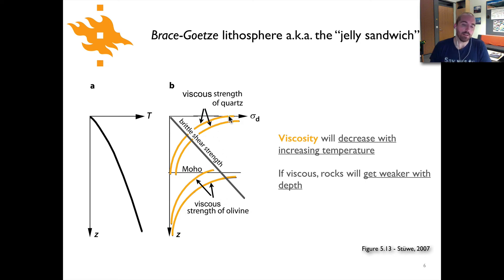You can see that the strength is highest at the lowest temperatures and it exponentially falls off as you go to higher and higher temperatures and that happens both in the crust and in the mantle lithosphere.